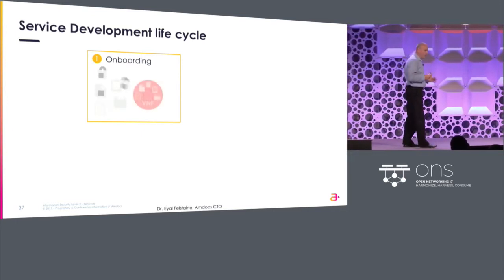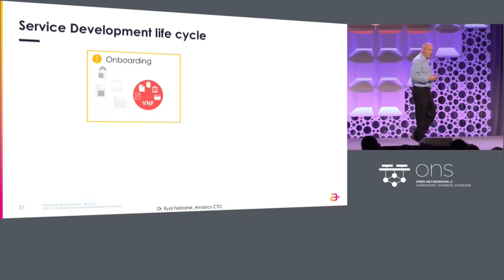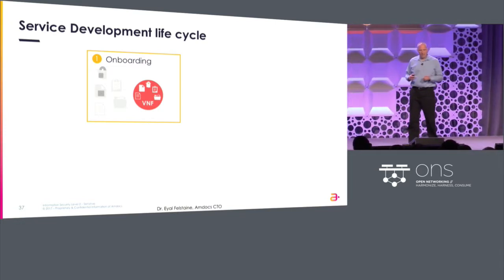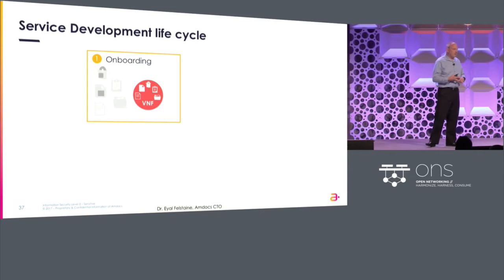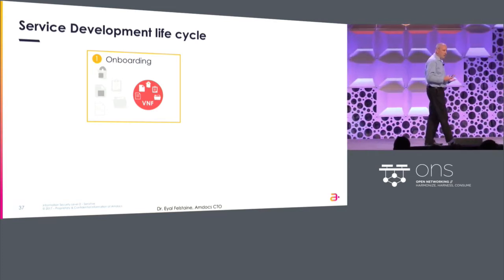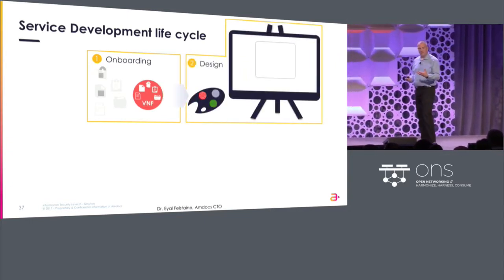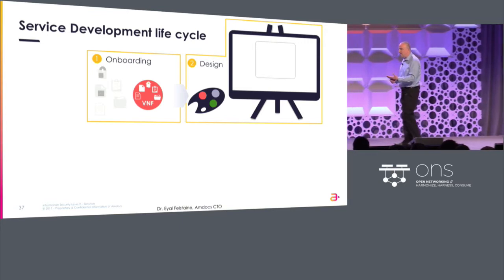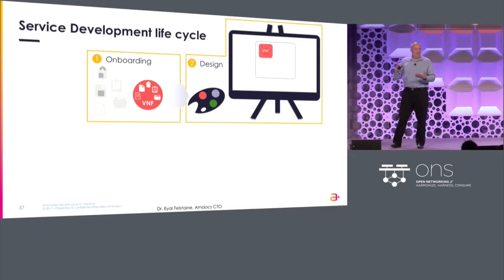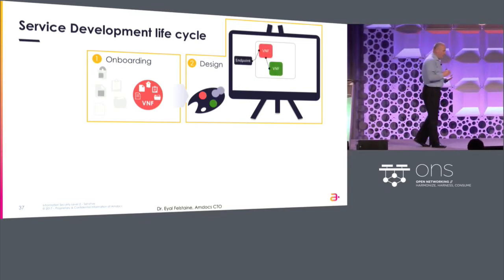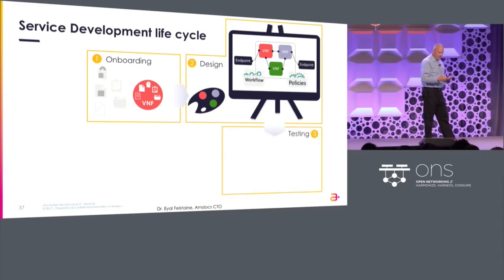When you want to have a new service, you need to onboard it. You take the VNF as an operator, you consume the VNF from the VNF vendor, including all of the artifacts — Tosca, automation scripts, all the code that comes with it from the VNF vendor. Once you approve it and certify it, you have it on the drawing board and you start putting up the service on the canvas. You add the automation script for the service, the policies, the workflow, and it's ready to be tested.